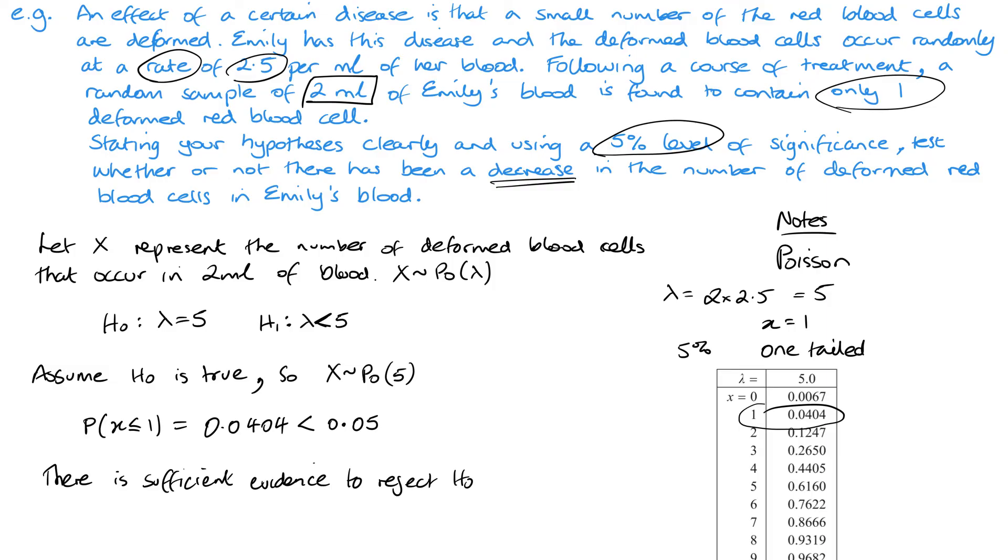Or you could say, you know, there's significant or enough evidence, anything like that, but basically about rejecting H0. Or you could say there's sufficient evidence to accept H1, so you could spin it that way. So that's your first sentence. And then your second final sentence is to bring it within context of the question. So there we need to say there's evidence of a decrease in the rate of deformed blood cells or the number of deformed blood cells.